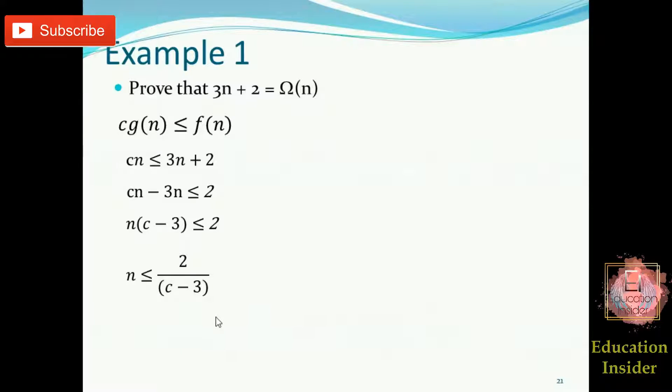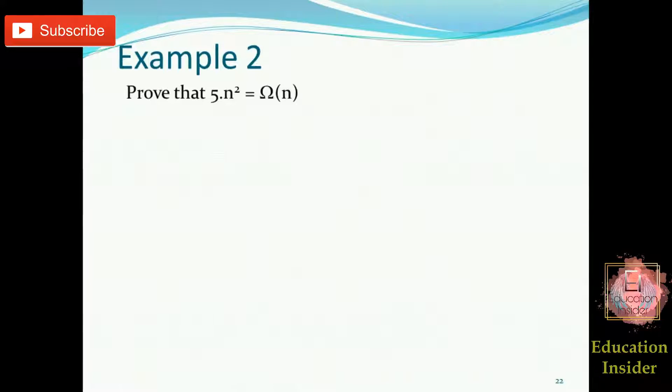As described in Big O part, we did this type of question same like this. We assumed c value such that n should not be negative or undefined. So assume c as 4, then we get n as 2. Okay, so yes we have proved the lower bound of this function f(n) that is 3n plus 2. Moving on to the next example.